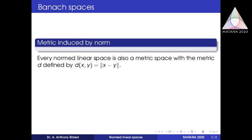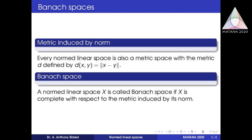Every normed linear space is also a metric space. If we define D(x, y) equal to norm of x minus y, then every normed linear space becomes a metric space — a norm induces a metric. With this metric, if a normed linear space is complete, then we call that normed linear space a Banach space.